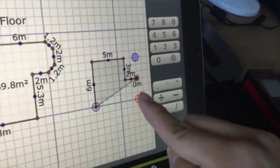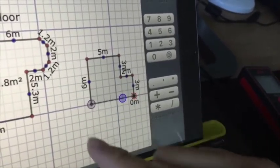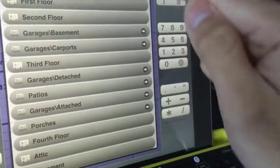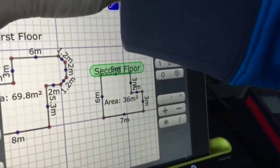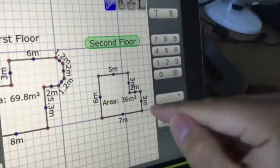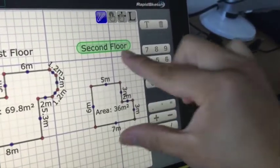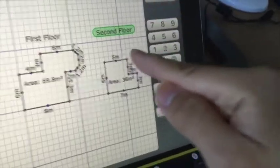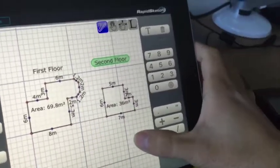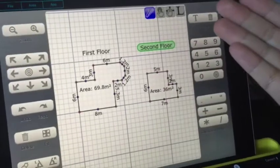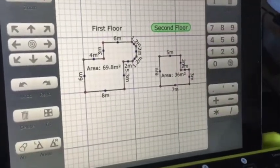So just simply click this and that will finish the second floor. And this one can move up. Now you have the first floor and second floor and the areas here. That's basically what this app does.